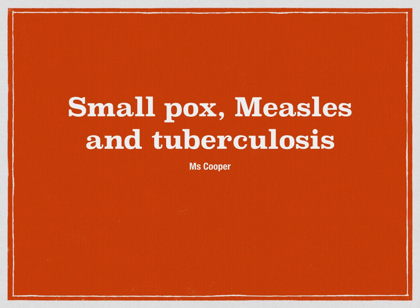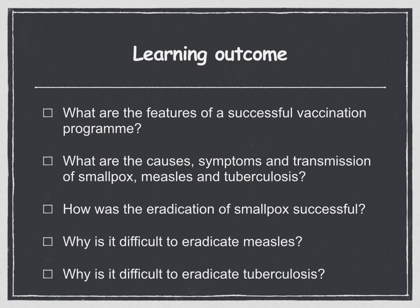In this topic, we're going to look at smallpox, measles and tuberculosis. By the end of this topic, you should be able to answer: what are the features of a successful vaccination program? What are the causes and symptoms of smallpox, measles and tuberculosis, and how do they transmit? How was the eradication of smallpox successful? And why is it difficult to eradicate measles and tuberculosis?